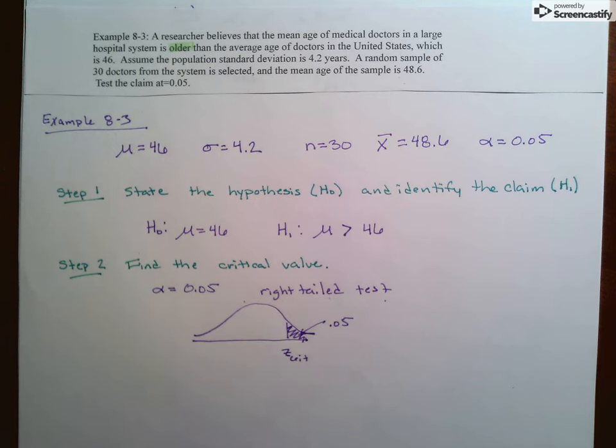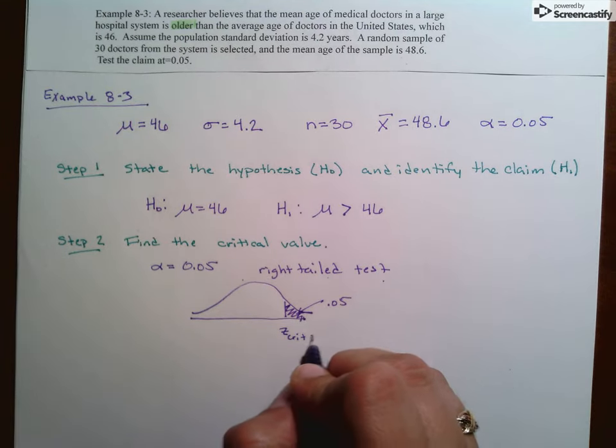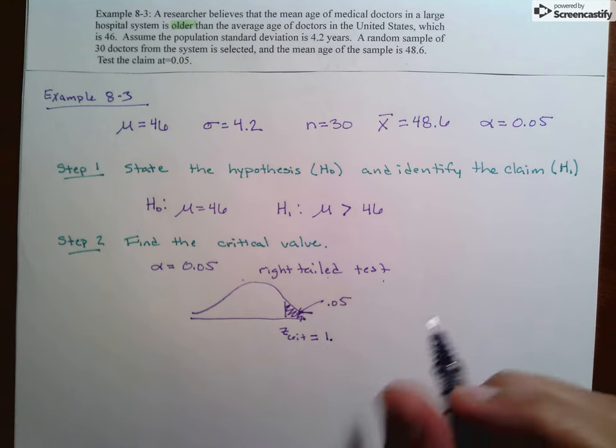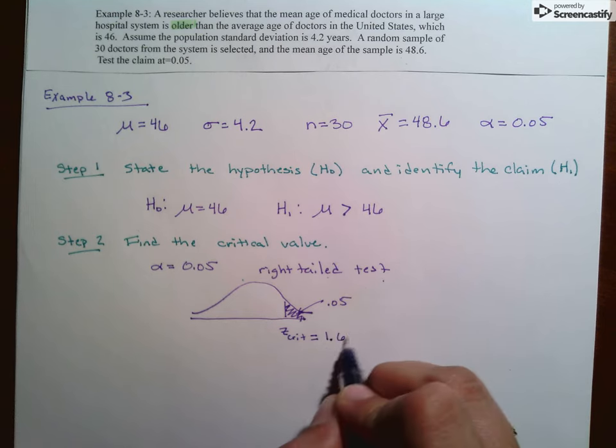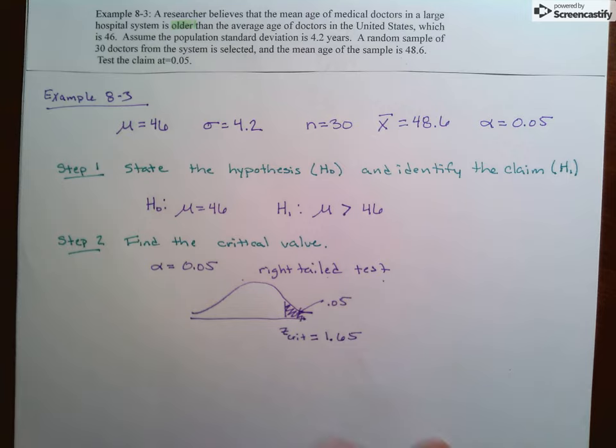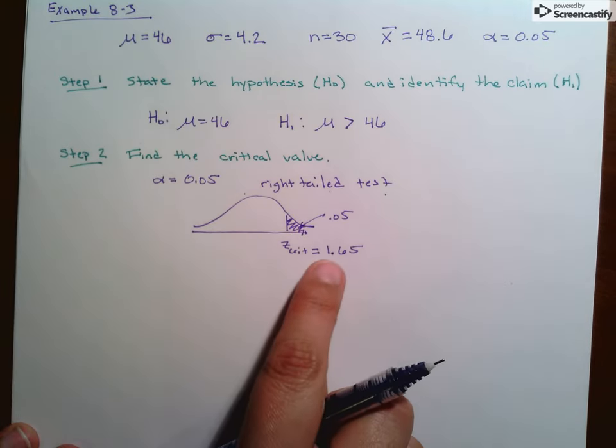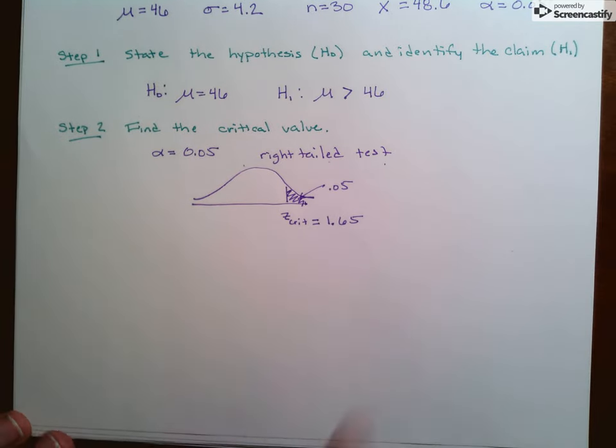So that means you go to the interior of your Z-table, and you look for an area of 0.05, and you find the associated Z-score. So in this case, that's going to be 1.65. If you're still struggling with finding that, definitely come see me.